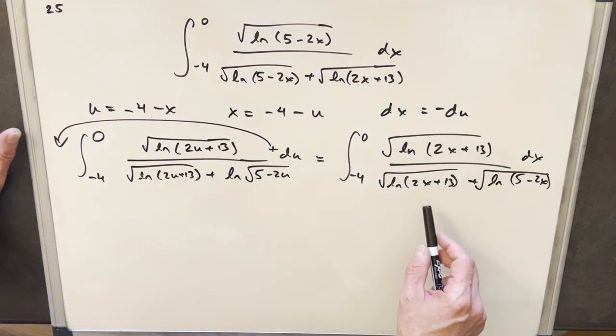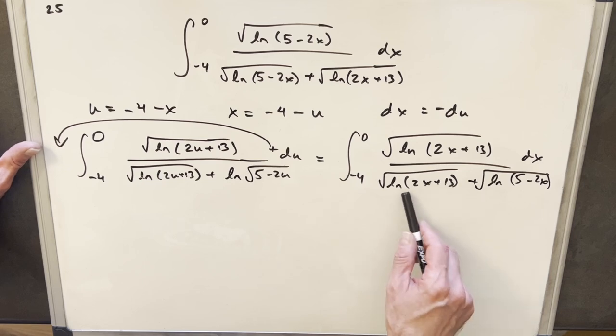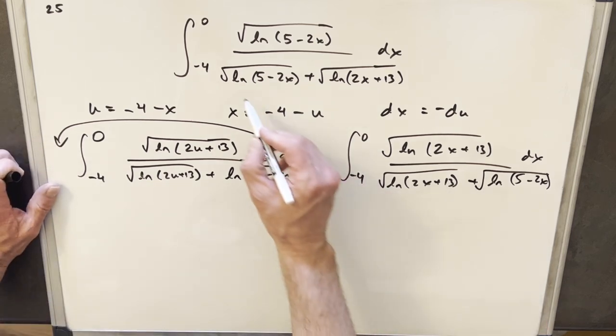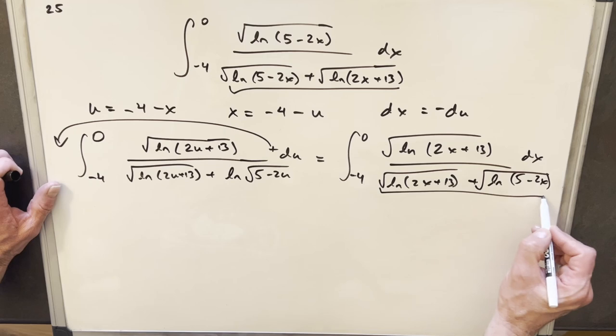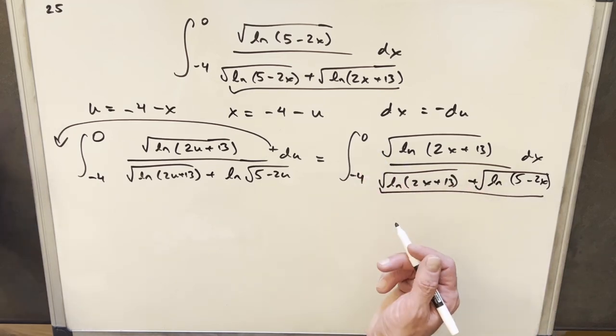So I'm going to just switch this all back to x. Okay, and now we're in pretty good shape. We've got it back in x. And notice actually our denominator here is exactly the same as our denominator here. Okay, it's just in a different order. And we're everything in x, we get the same bounds.